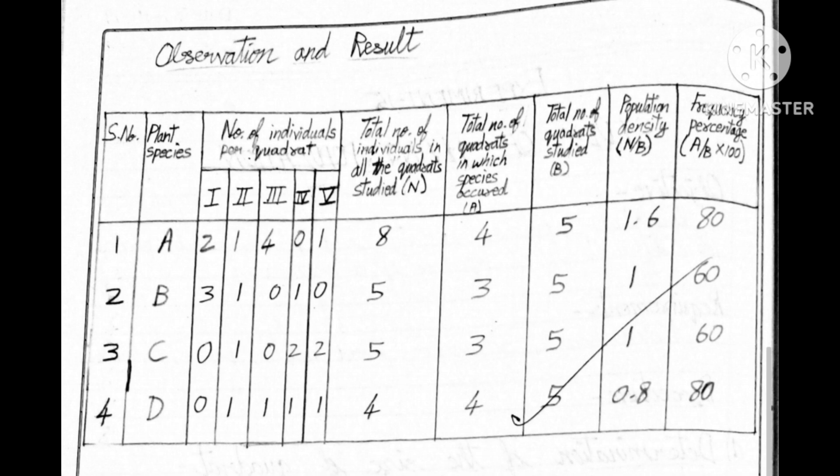Then the population density that is N by B. N by B, that is 8 by 5. When you divide you will get 1.6. For frequency, A by B multiplied by 100. For that, A is 4, B is 5. 4 divided by 5 multiplied by 100 you will get 80. In that way we have to calculate for all species.